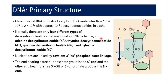Normally there are only four different types of deoxyribonucleotides found in a DNA molecule: adenine deoxyribonucleotide, thymine deoxyribonucleotide, guanine deoxyribonucleotide, and cytosine deoxyribonucleotide — respectively noted as dA, dT, dG, and dC.